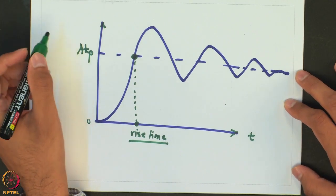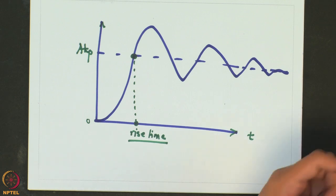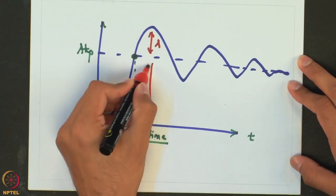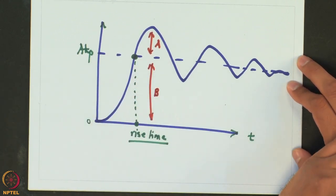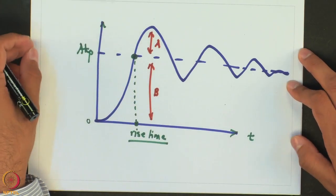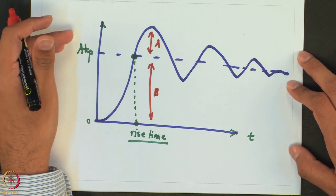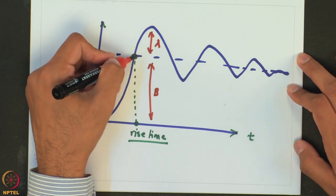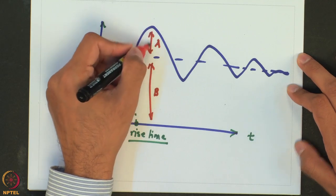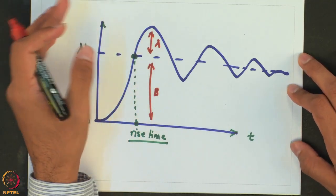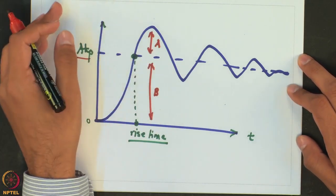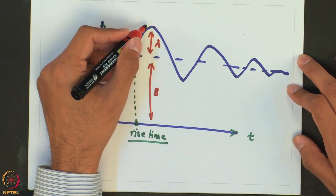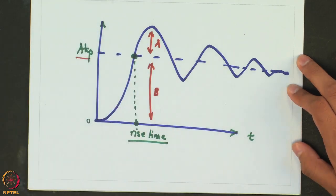The next term is overshoot. Since an underdamped response overshoots the final value, we quantify this: if we measure the peak above the ultimate value as A and the ultimate value as B, the overshoot is defined as A over B. From a controller perspective, we want a low overshoot because we do not want the response to go much beyond the design final value — there may be physical limitations or safety limits, such as for a reactor temperature.